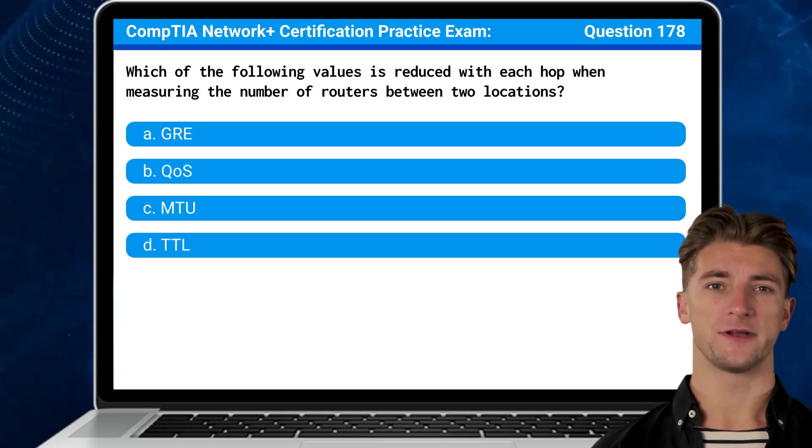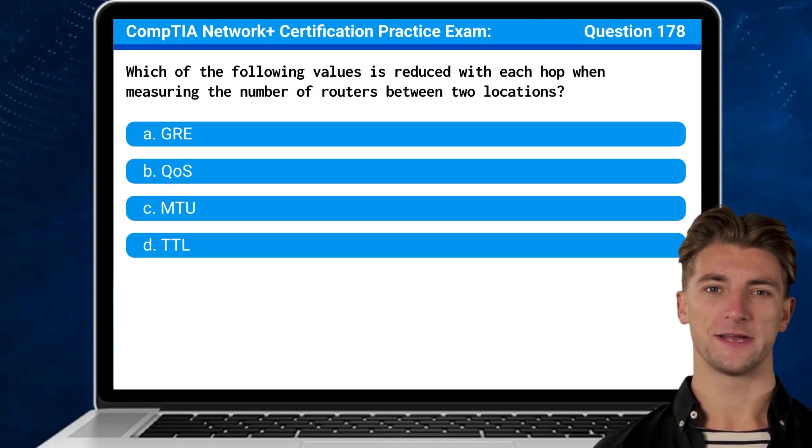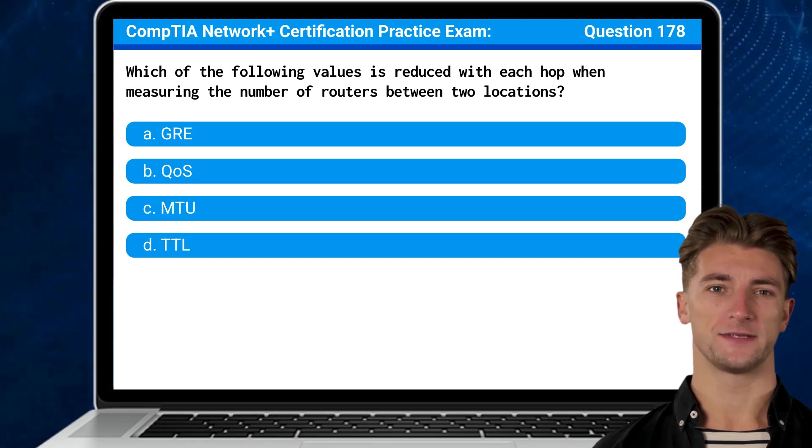Question 178. Which of the following values is reduced with each hop by measuring the number of routers between two locations?